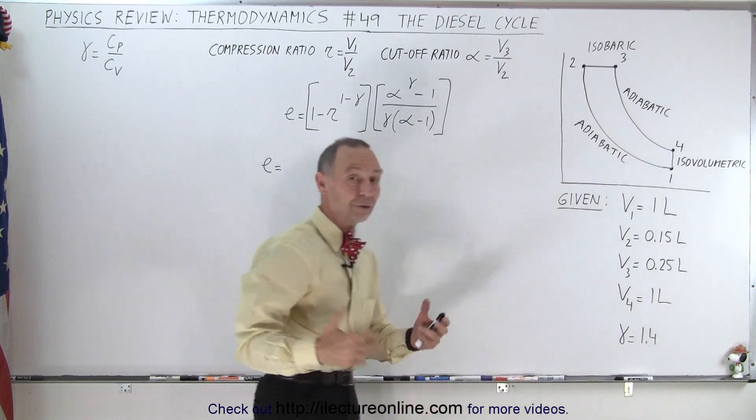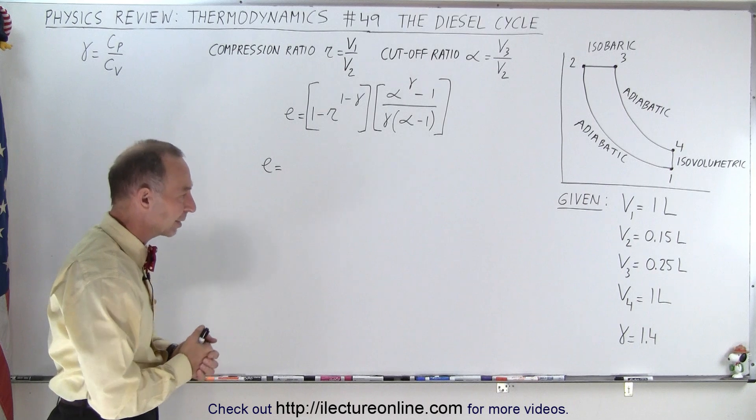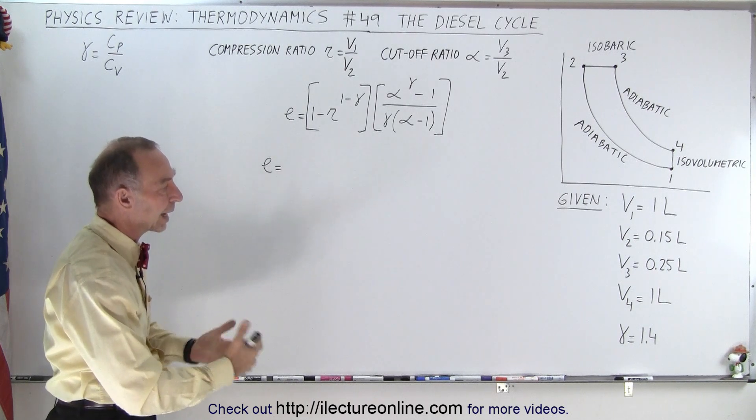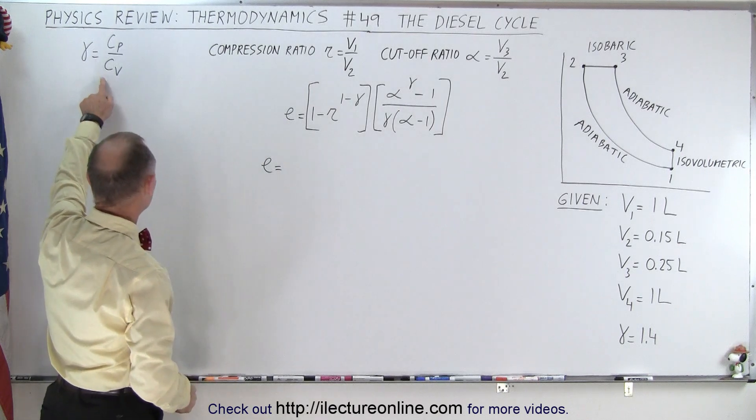And of course we know that gamma for the adiabatic process, air being a diatomic gas, is 1.4. It's C_P over C_V, which is defined right here.